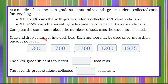We're going to drag and drop a number into each box. Each number may be used once, more than once, or not at all. So you have five numerical values that you're picking from here to complete these two statements: the 6th grade students collected blank soda cans, and the 7th grade students collected blank soda cans — remembering that each of these numbers may be used once, or not at all, or maybe it's the same amount for both.